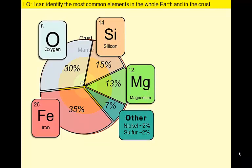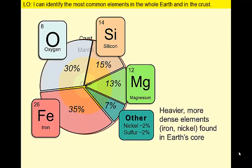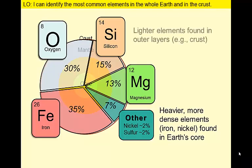Dense elements such as iron and nickel sank to Earth's core during the early history of the planet. The core and the mantle do contain silicon and oxygen, but these lighter elements are much more abundant in the outer layers of Earth, and especially in the crust.